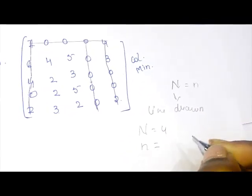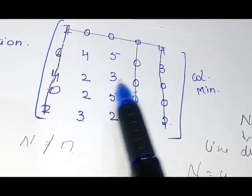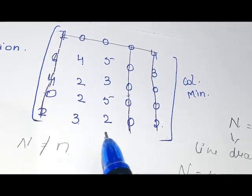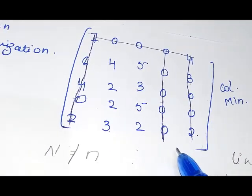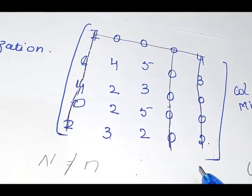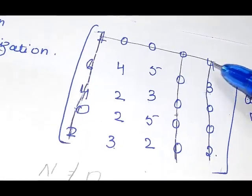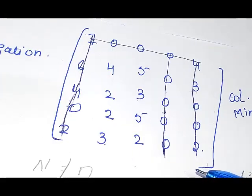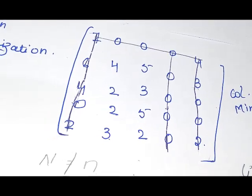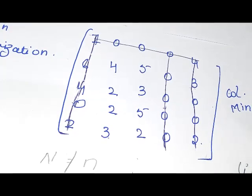Since the N = n condition is not satisfied, further modification of the matrix is required. We retain all elements covered by the lines as they are in the next matrix, except at intersection points — where two lines cross at a particular element, such as positions containing 0, 4, and 7. Those intersection elements require modification. All other elements covered by lines are retained as is.